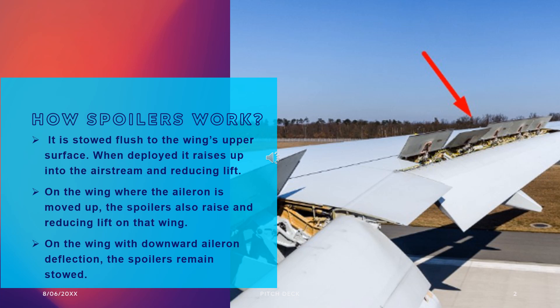Spoilers are basically made with similar construction materials and techniques as the other flight control surfaces on the aircraft — often honeycomb flat panels. At low speeds, spoilers are rigged to operate when the ailerons operate, to assist with the lateral movement and stability of the aircraft. On the wing where the aileron is moved up, the spoilers also raise, amplifying the reduction of lift on that wing.